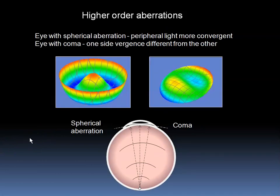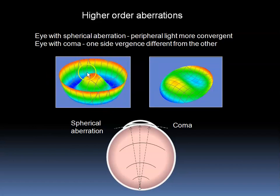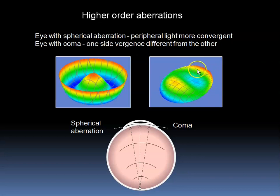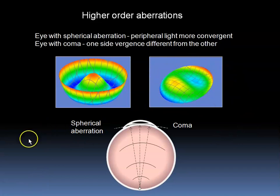Before we saw the lower order aberrations. Now we are looking at the higher order aberrations. In this diagram, we see spherical aberration, in which the periphery undergoes more refraction and moves ahead of the central part of the wavefront. There is also a small central area that moves ahead of the mid-peripheral. Coma results when one side of the wavefront has a different vergence than the other side — one side of the wavefront is running ahead of the other side. This was the comma-shaped blob described in an earlier slide.